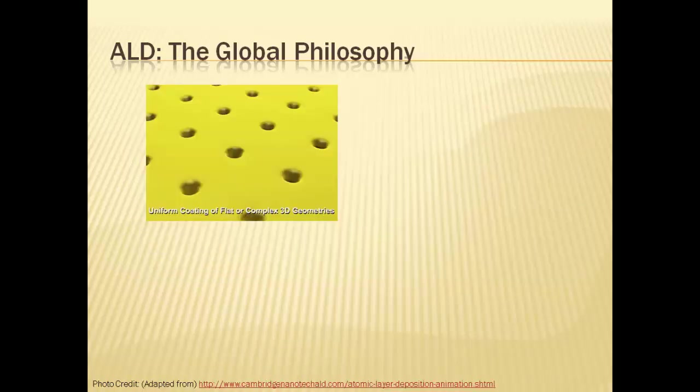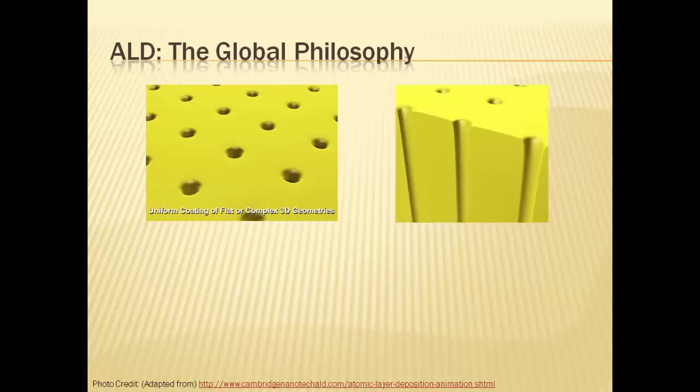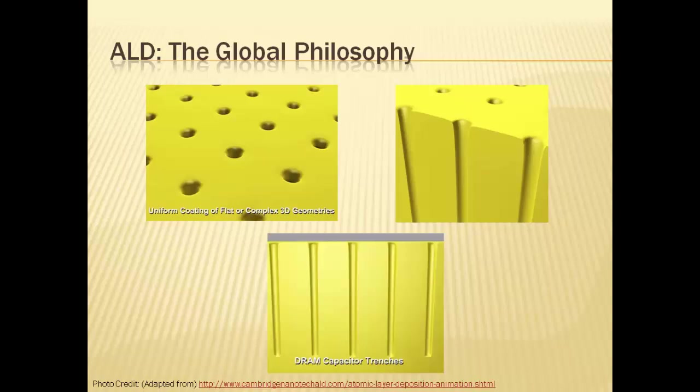Atomic layer deposition is a technique that can be used to provide a uniform or better termed as conformal coating of atomic or molecular layers on different surfaces including complex 3D geometries, amorphous substrates, nanotubes, etc. Shown here is such a surface and a cross-sectional view helps us understand about the structure better. These essentially form the capacitor trenches of DRAM. The idea is to conformally coat the surface with some material such as aluminium oxide.